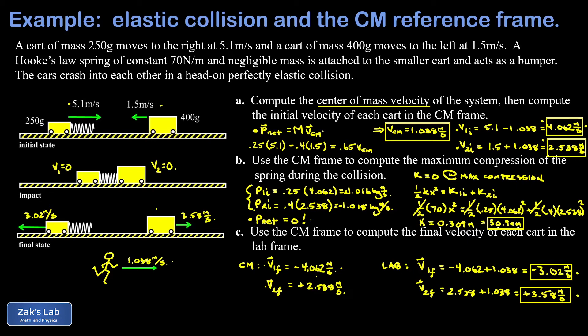This problem is a great window into how physicists think. A direct lab-frame analysis would require solving a non-linear system of equations with a lot of algebra. Instead, we made a trade-off: imagining running at 1.038 m/s is abstract, but it made the elastic collision guessable and eliminated the algebra. We just transformed back to the lab frame for the final answers. Consider using a reference frame transformation whenever you analyze a collision problem.